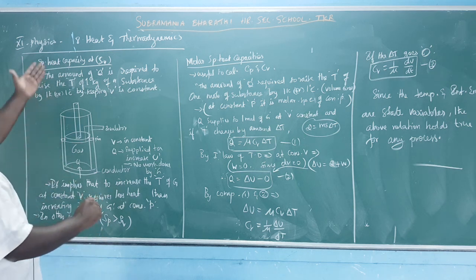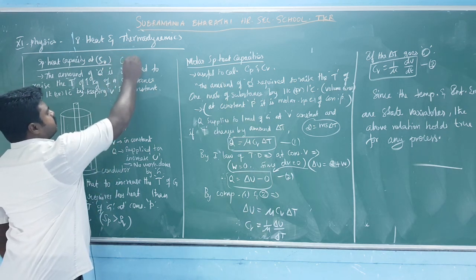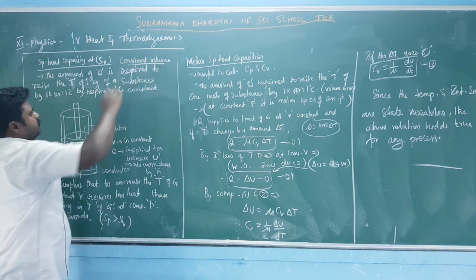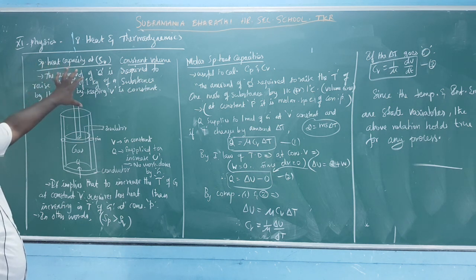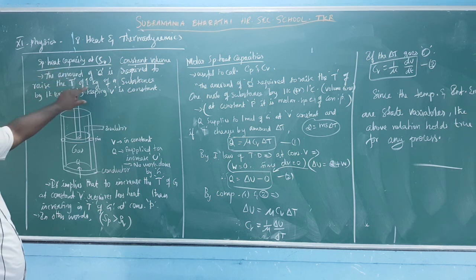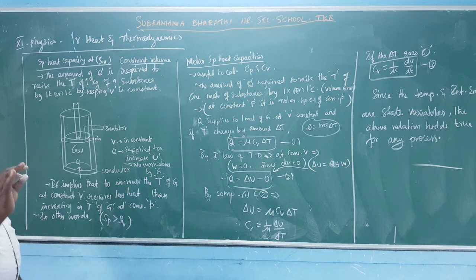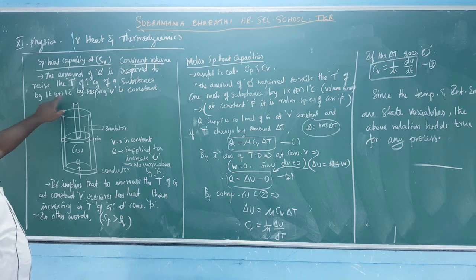We talk about specific heat capacity at constant volume. Here we have a statement: the amount of heat required to raise the temperature of 1 kg of a substance by 1 Kelvin or 1 degree Celsius, by keeping the volume constant. That is why constant volume is specified.